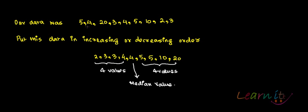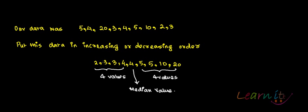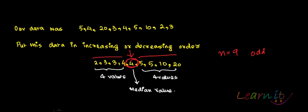Supposedly if your data excluded the value 1, that makes n equals 9, which means odd. When n is odd, it's simple — there will be four values above the median and four values below the median. You arrange the data in increasing order: 2, 3, 3, 4, 4, 5, 5, 10, 20. The first four values are here, the next four values here, and the middle value is the median. So the median value is 4.